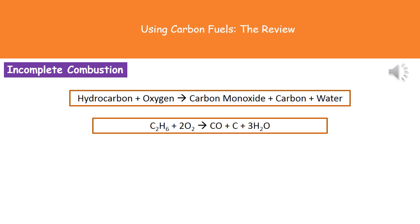Underneath I've given you the balanced symbol equation for an example — ethene, C2H6, is our hydrocarbon. Plus oxygen makes carbon monoxide (CO), plus carbon (C), and water (H2O). All we've done is balanced it: we need a 2 in front of our O2 and a 3 in front of our H2O.